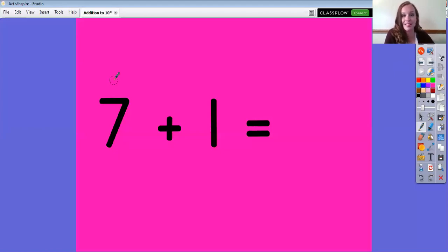This problem says 7 plus 1 equals. This one's pretty easy to figure out. What's the bigger number? 7. And we only have to count up one more number. 7, 8. That was quick. The answer is 8. Make an S but do not wait. Go back up and close the gate. 7 plus 1 equals 8.